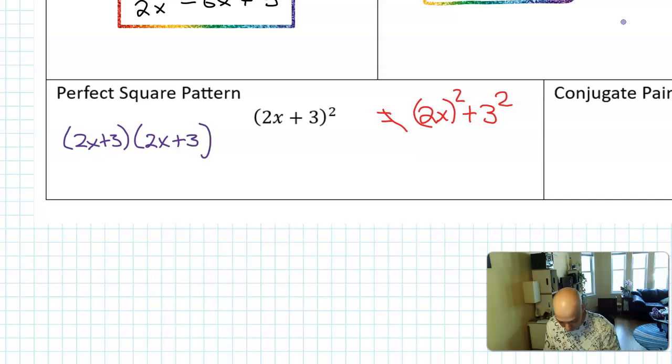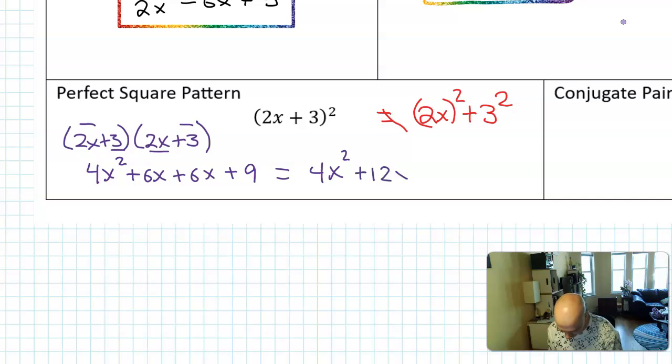Instead, you want to think about that as 2x plus 3 times itself. That's what squaring means. And we're going to follow the distributive property. So you get a 4x squared. And we do the 3 and a 2x. And we get a 6x. And we get to do a 2x and a 3. And we get another 6x. And it's interesting that those middle terms match up. And then we do the 3 and the 3. And we get a 9.